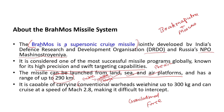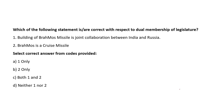BrahMos has the capability of carrying conventional warheads, and its speed is Mach 2.8. It does not have the capability of launching nuclear warheads because India is not a signatory to many important agreements which allow collaboration on transport of nuclear weapons. Hence India and Russia have not been able to build a version that can transport nuclear warheads.